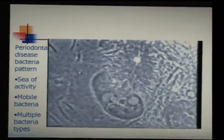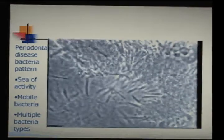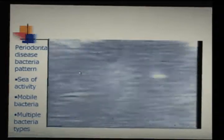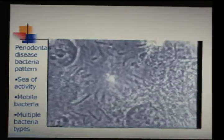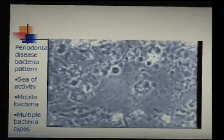Periodontal disease bacteria pattern. When you take a sample of plaque and put it under a microscope, if a patient has periodontal disease, you'll see a sea of activity. The more virulent the infection, the faster the bacteria seem to move and the more vigorous they appear.